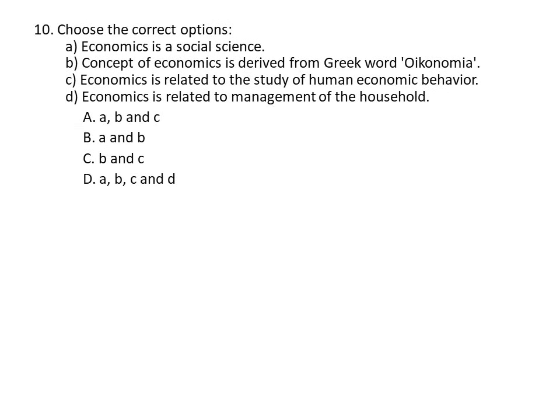Question ten: Choose the correct options. A) Economics is a social science. B) The term economics is derived from the Greek word 'economia.' C) Economics is related to the study of human economic behavior. D) Economics is related to the management of household. Answer choices: A, B, C are correct; A and B; B and C; or all are correct. The answer is D, all are correct. Explanation: The English term economics comes from the Greek word 'economia,' meaning household management. Economics studies money-earning and spending activities of man, related to human economic behavior.